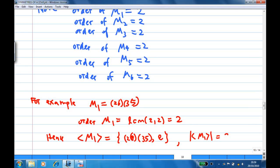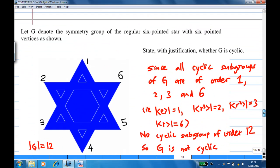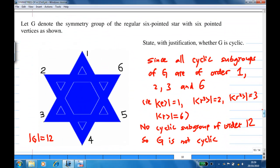So, we have at least one possible subgroup of each order. Since all cyclic subgroups of G are of order 1, 2, 3, and 6: the subgroup generated by E has order 1, the subgroup generated by R^3 has order 2, the subgroup generated by R^2 has order 3, and the subgroup generated by R has order 6.